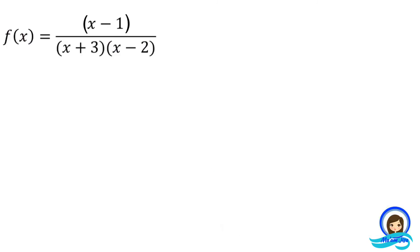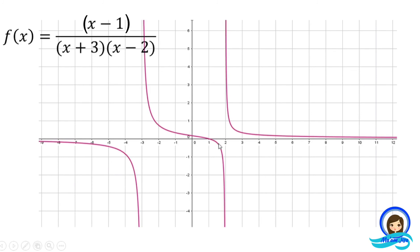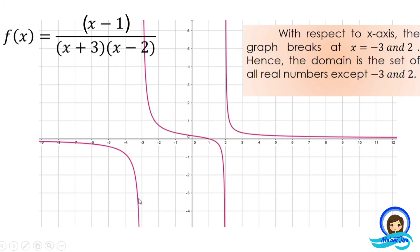In our third example, we have the rational function f of x equals quantity x minus 1 over quantity x plus 3 times quantity x minus 2. As you can see, there are two quantities being multiplied in the denominator. Using the graphing software, this is how the graph looks like. With respect to the x-axis, we observe that there are two values where the graph tends to break: x equals negative 3 and x equals positive 2. Hence, the domain is the set of all real numbers except negative 3 and 2, as the graph does not cross these particular values.